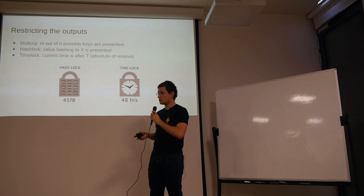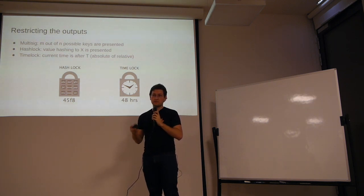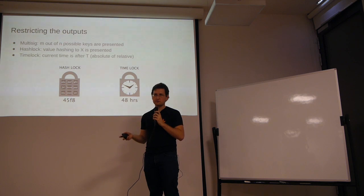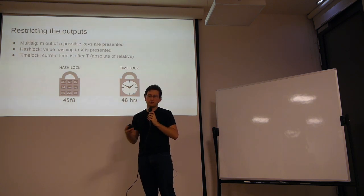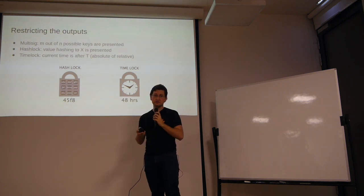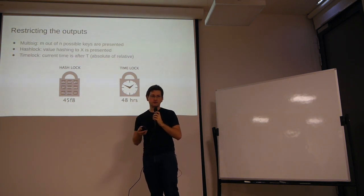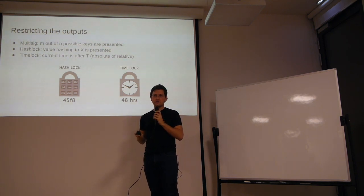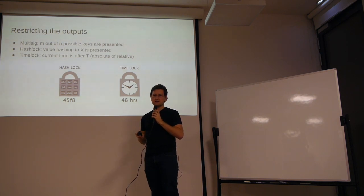Timelocks determine some point in the future where a transaction becomes valid. Before that point in time, it cannot be included in a block — we can broadcast it, but miners won't mine it because it's not yet valid. Timelocks can be defined as relative or as absolute. Absolute timelocks are defined in number of blocks or timestamp, while relative timelocks are defined in terms of the time that has passed since the block where the transaction is mined.